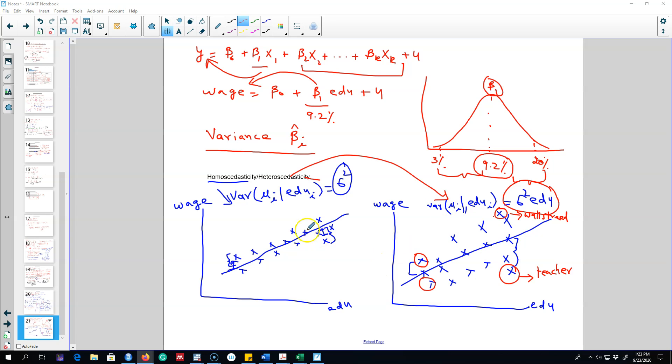So notice here that the average effect of education on wages is still unbiased, but it is the variance which is biased.